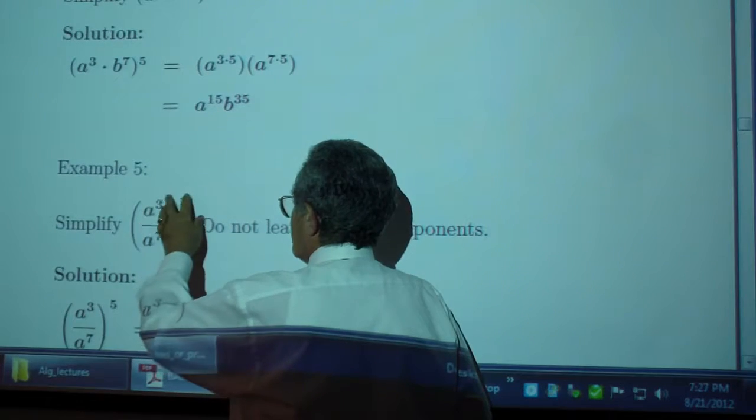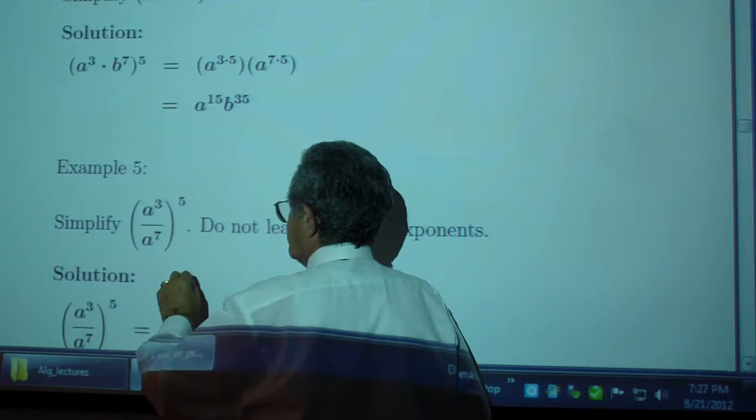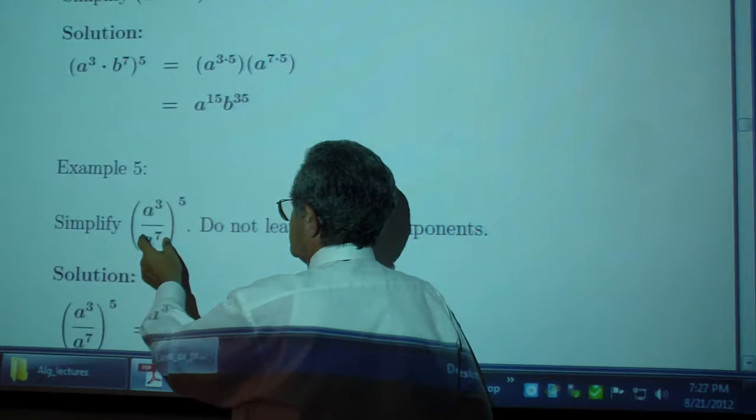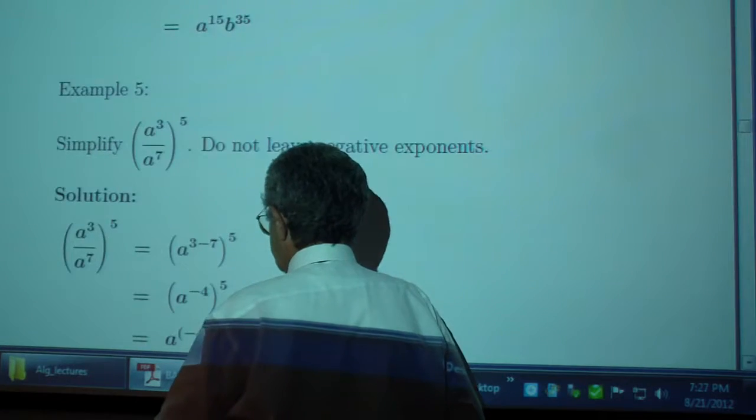You get 8 cubed, 5 of those, that's 8 to the 15th. You have 5 of these, so 7 times 5, 35.